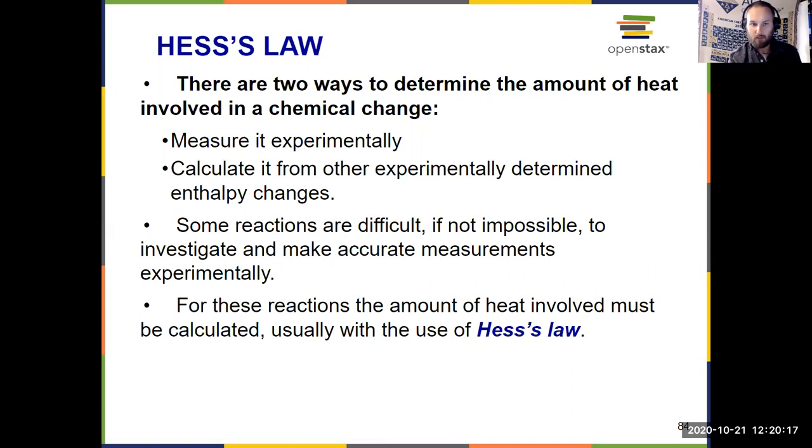There are two ways to determine the heat involved in a chemical change. You can measure it in the lab using calorimetry. Do the reaction, use a calorimeter, see how much heat is produced or consumed. But that's not always feasible to do all the time. So what Hess's law does for us is provide two ways that you can calculate the heat of a reaction from quantities that have already been determined experimentally for enthalpy values.